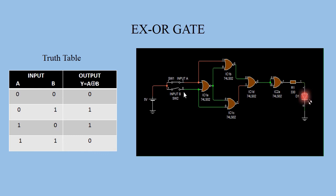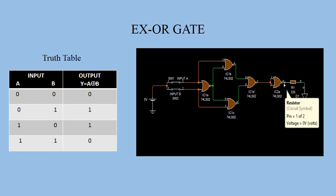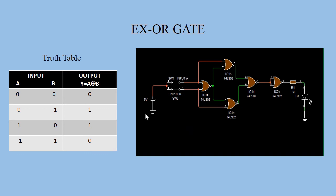Fourth row: input A=1 (switch 1 is closed) and input B=1 (switch 2 is also closed). This is 1 input line and this is 1 input line, so from here we get 0. This is 1 and this is 0, so from here we get 0. This is 0 and this is 1, so from here we get 0. These two 0 lines give 1. This 1 output is connected with the inverter circuit, giving 0 — LED is in off condition. This is the XOR gate by using NOR chip only, and from this we can easily verify the truth table practically.